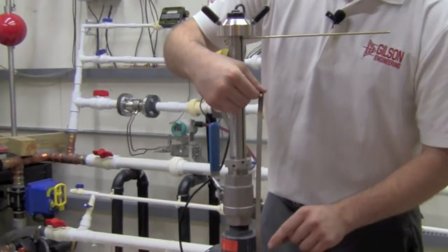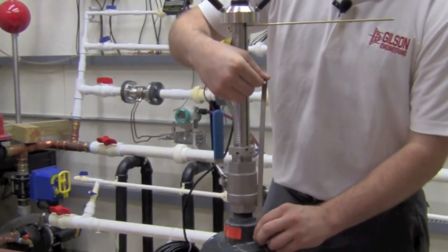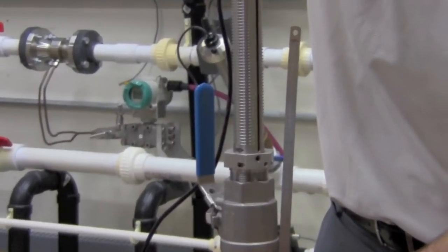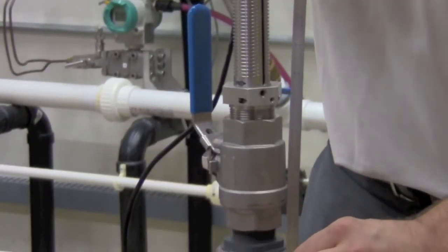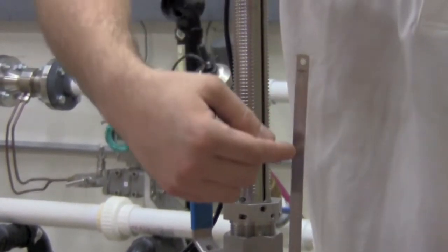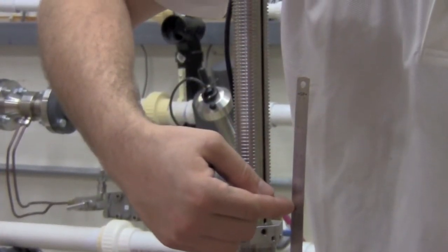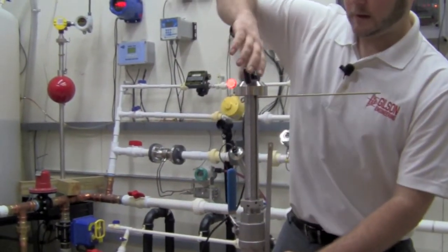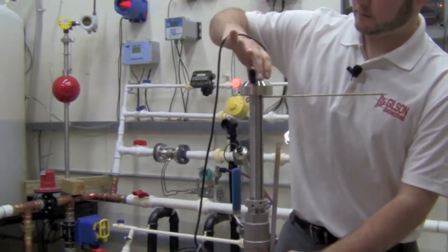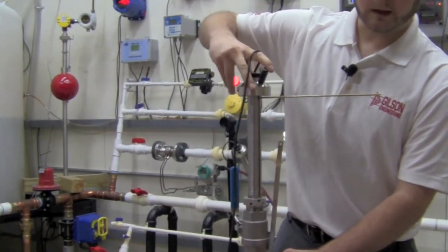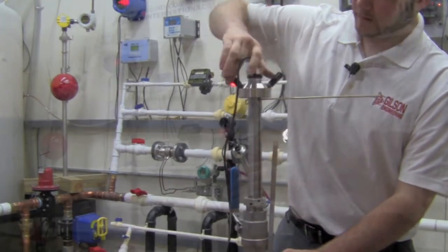You're going to be measuring from the top of the pipe, and we're going to begin to adjust the wing nuts until the alignment dowel corresponds with your calculated depth. So I can begin to tighten the unit in, and it will begin inserting through the ball valve.